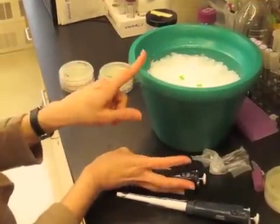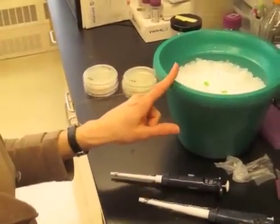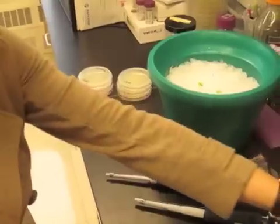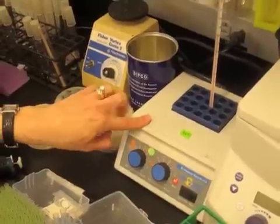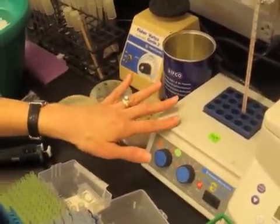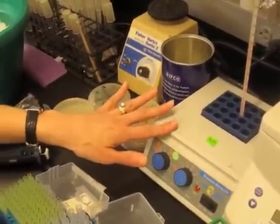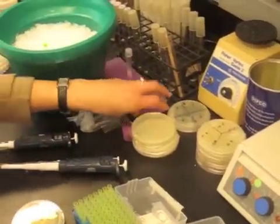And these can sit on ice for a few minutes and then can be added to a heat block for 90 seconds exactly at 42 degrees. If you don't have a heat block, you can use a water bath that's heated up to 42. You'll take them out and you'll put them into a rack at room temperature.